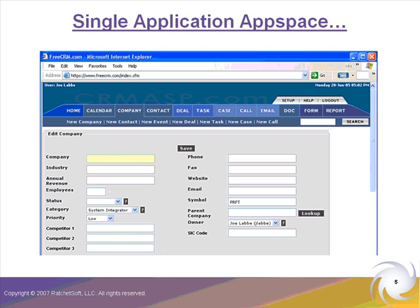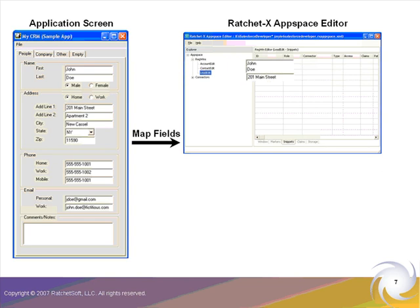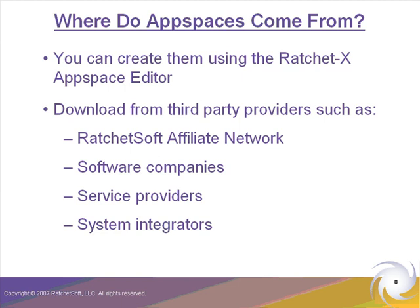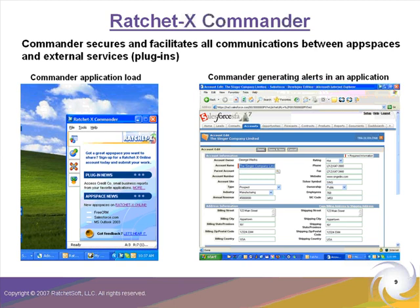An AppSpace can range in definition from one field on one application screen to hundreds of fields that span multiple applications — it's really up to you and the way you work. You can create AppSpaces using the RatchetX AppSpace editor, or you can download pre-configured AppSpaces from RatchetSoft or any number of third-party providers. Once you create an AppSpace, you need to register that AppSpace with the Commander.